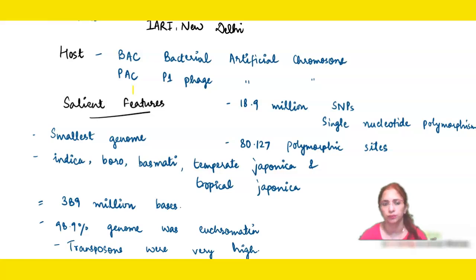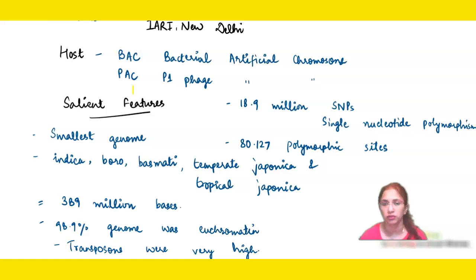To summarize: rice had the smallest genome; 5 varieties were found — Indica, Boro, Basmati, Temperate Japonica, and Tropical Japonica; 389 million bases were found; 98.9% of the genome was euchromatin, helping in gene expression; transposons or jumping genes were very high; 18.9 million SNPs were found; and 80,127 polymorphic sites were seen.